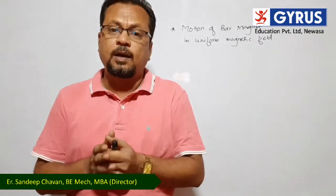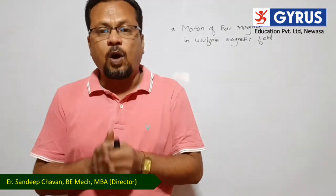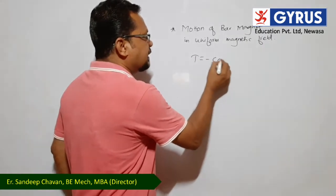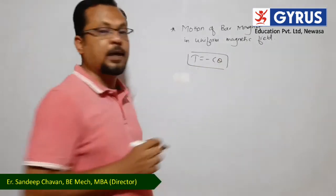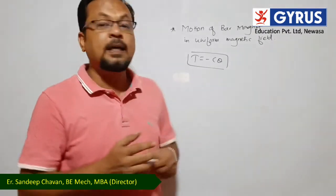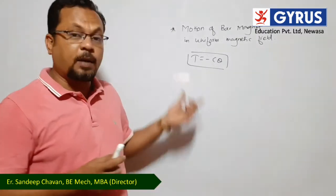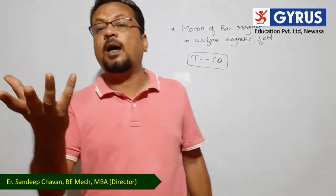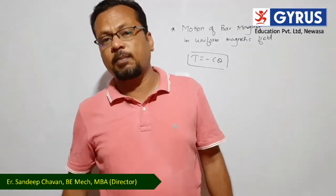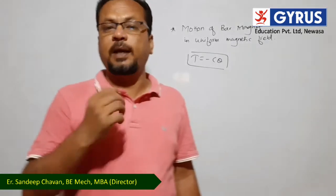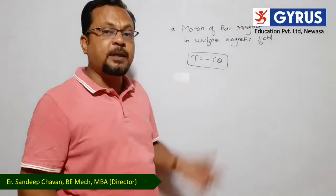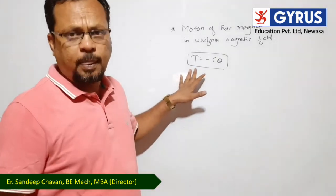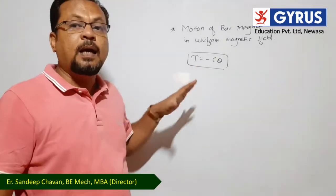When we talk about angular simple harmonic motion, torque is equal to some constant into theta — the governing equation. Torque is equal to minus c into theta, where c is the twist constant and theta is the angular displacement. The restoring torque brings the system back to its mean position. Therefore, torque and displacement are in direct proportion, but opposite in direction — this is the governing law of angular simple harmonic motion.